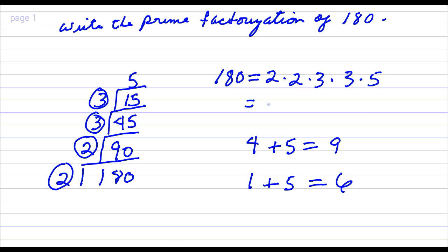Or if you choose, you can write the prime factorization of 180 as 2 squared, because there's two factors of 2, times 3 squared, because there's two factors of 3, times 5.